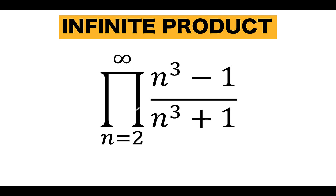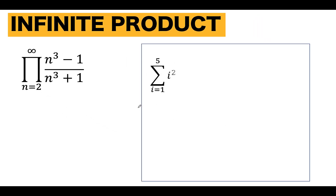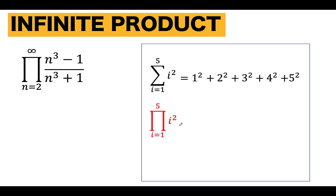What is the meaning of this capital pi symbol? This capital pi symbol is our product operator, similar to the sigma notation for addition. To understand this problem, let's compare it with sigma notation. When we have sigma of i squared, i from 1 to 5, this means we add the sequence: 1 squared plus 2 squared plus 3 squared plus 4 squared up to 5 squared. When we have capital pi of i squared, i from 1 to 5, this means we multiply: 1 squared times 2 squared times 3 squared times 4 squared up to 5 squared. So capital pi notation is for the product of a sequence of numbers.